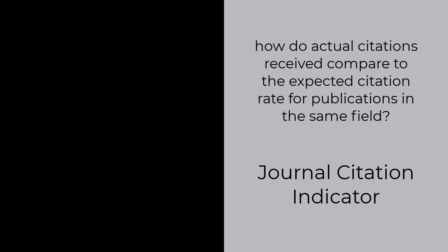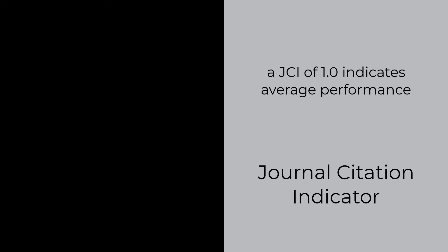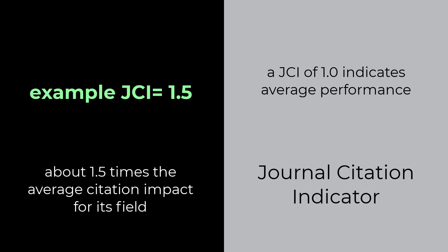The Journal Citation Indicator measures the normalized citation impact of a journal compared to its peer group. It examines how the journal's actual citations received compare to what would be expected for publications in the same field. A JCI of 1.0 indicates average performance. If a journal has a JCI of 1.5, you could say that it had about one and a half times the average citation impact for its field.